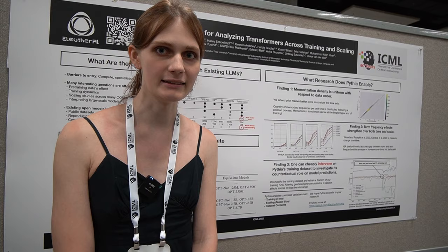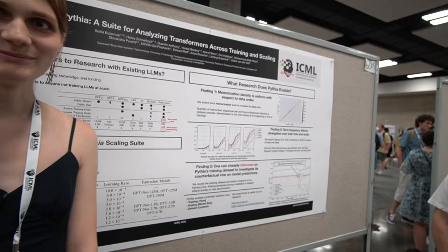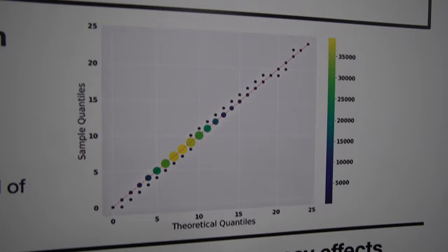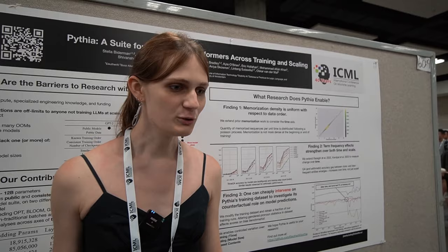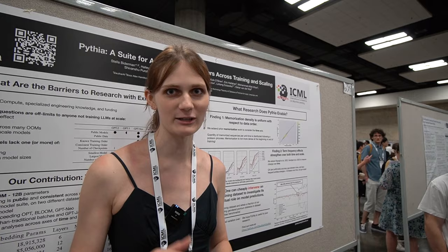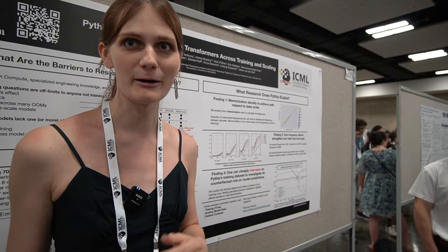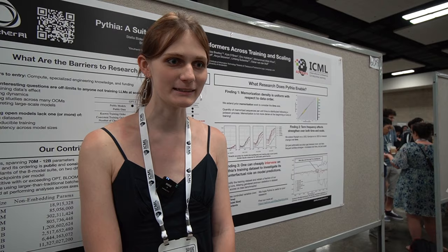Is it more likely memorized in the first 5% or in the last 5%? It's equally likely, which was very surprising to us. This plot shows a QQ plot fitting our data on the number of data points memorized per step to a Poisson distribution — a distribution where you look at how many times some event occurred in a given interval of time, where the event is a memorized sequence. We find that a Poisson distribution is a very good fit, which is surprising because a Poisson is a memoryless distribution where it doesn't matter if you memorized a bunch of data points the step before — the expected number of data points you'll memorize in the next step is still the same. So basically, data points are not more likely memorized if they're later in training or earlier in training.